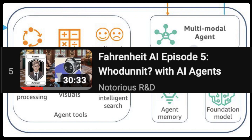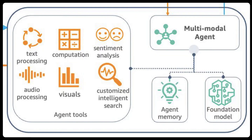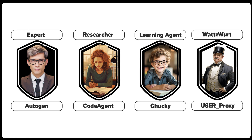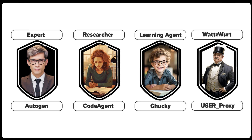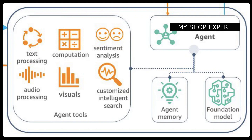I used the game of Clue as a creative aspect to understand AI agents. There was a user proxy — the butler Wadsworth — who talks to all the other agents and communicates with us. There was a learning agent, a researcher that could do code, and an expert. An expert would be one that is in your shop and knows your shop — it could also be an expert for a vendor like Stahls. Your user proxy goes back and forth and speaks to your expert and their expert to reach a conclusion based on what you prompted, like finding full color hat transfers.